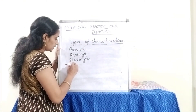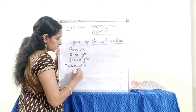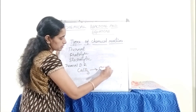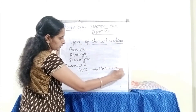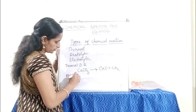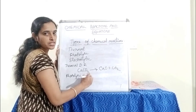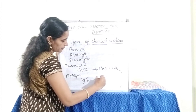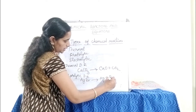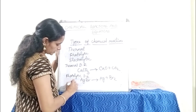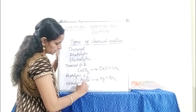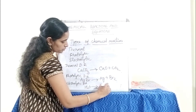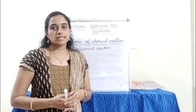The first sub-type is thermal decomposition: CaCO3 → CaO + CO2. Next is photolytic decomposition: AgBr → Ag + Br2. Next is electrolytic decomposition: H2O → H2 + O2.